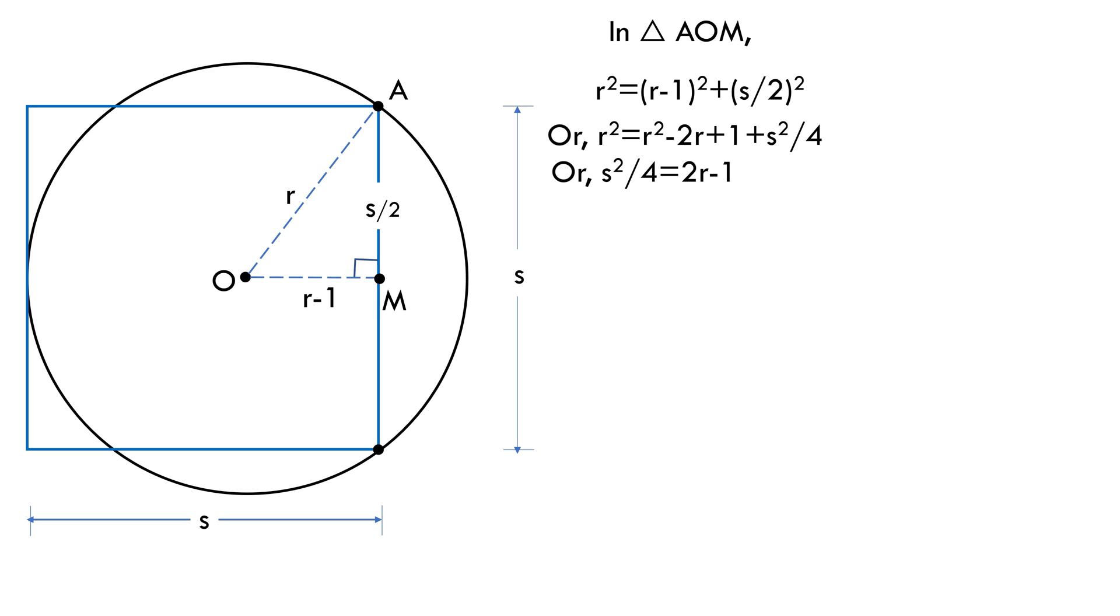Let's suppose the diameter of the circle to be D. Here it is given by this distance. Because 2 times radius of the circle equals diameter of the circle, we replace 2R with D and that gives us S squared by 4 equals D minus 1, or S equals root of 4D minus 1. Let this be equation 1.